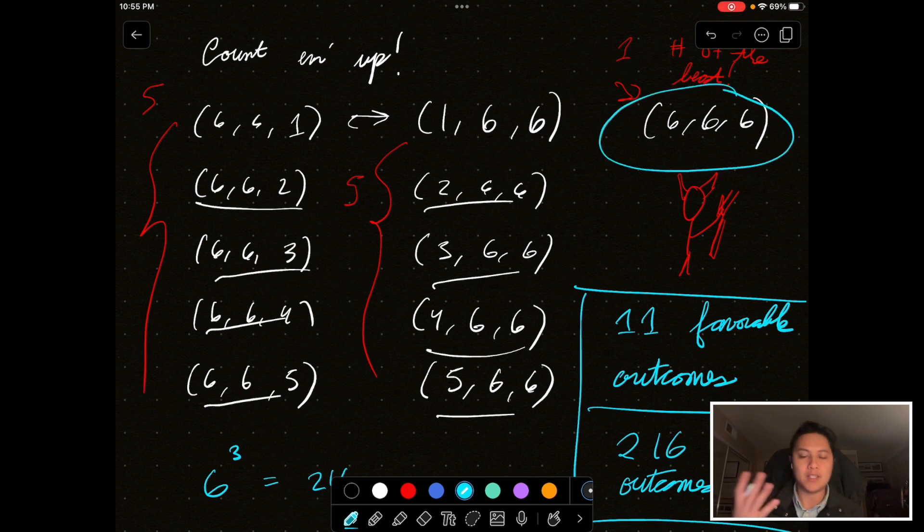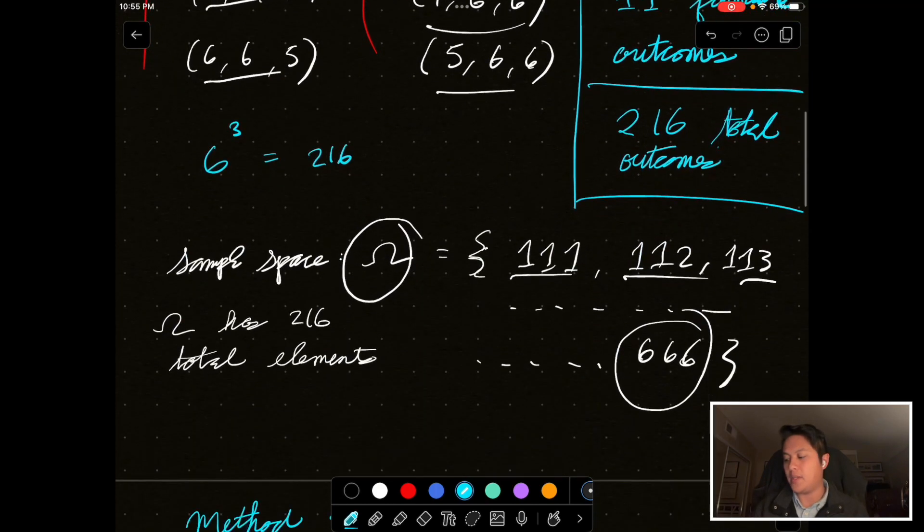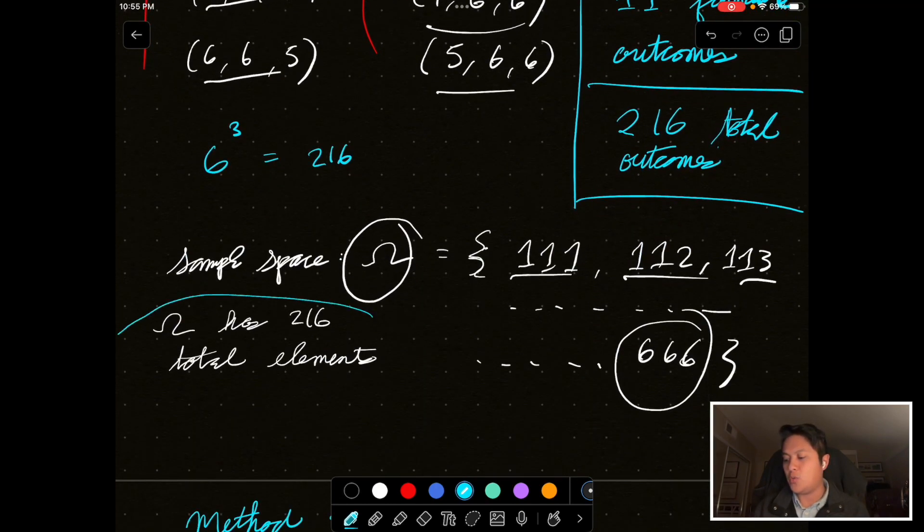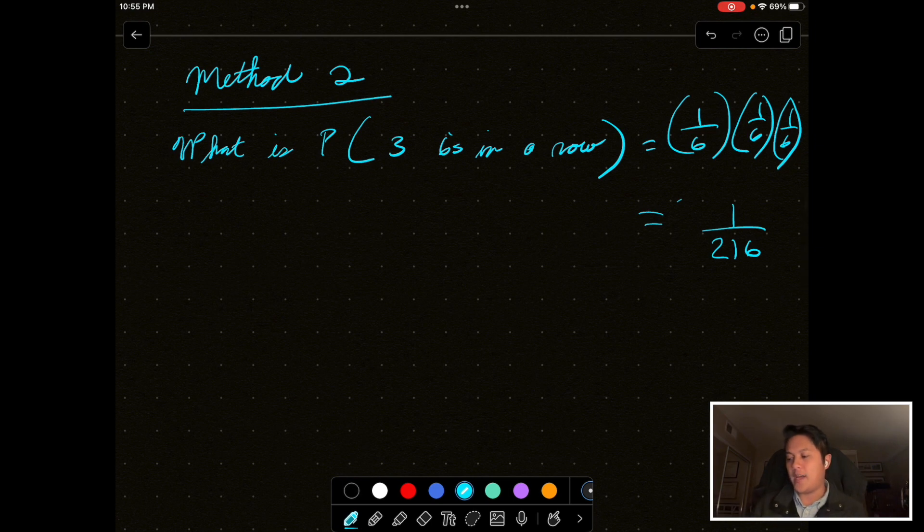Again, that's just equal to one over 216, which just recreates what we had up here, right? This is that event where we get three sixes in a row. So, it is one possible outcome in the 216 total outcomes, out of the 216 total outcomes in our sample space, okay? So, that's the 216, one over 216 for the three sixes.